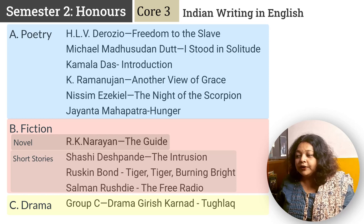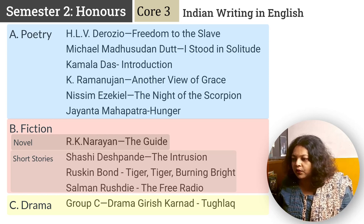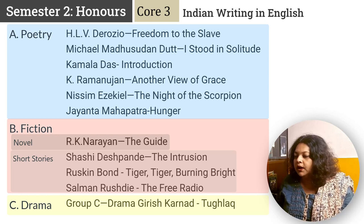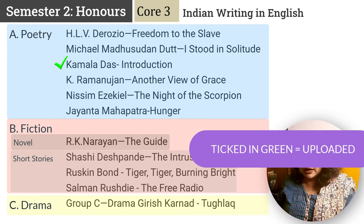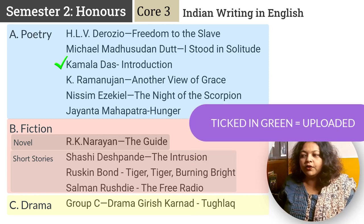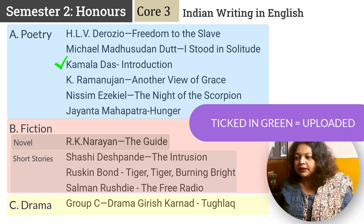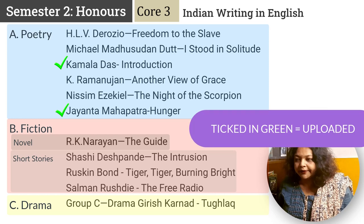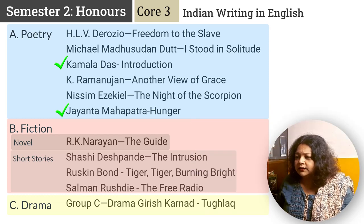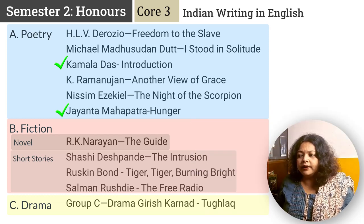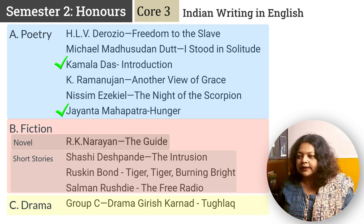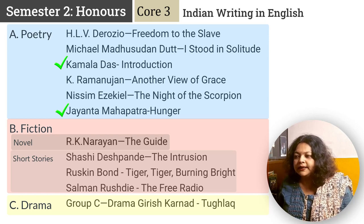The poems in Core 3 are: Freedom to the Slave by Derozio, I Studied in Solitude by Michael Madhusudan Dutt, Introduction by Kamala Das, Another View of Grace by Ramanujan, The Knight of the Scorpion by Nissim Ezekiel, and Jayanta Mahapatra's Hunger. In Group B fiction, you have R.K. Narayan's The Guide, and three short stories: The Intrusion by Shashi Deshpande, Tiger Tiger Burning Bright by Ruskin Bond, and The Free Radio by Salman Rushdie.